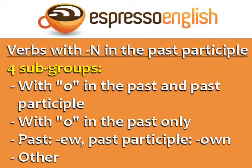A number of irregular verbs have N in the past participle. These can be divided into four subgroups: with O in the past and past participle; with O in the past only; verbs with the past form ending in EW and the past participle in OWN; and other.